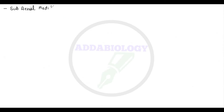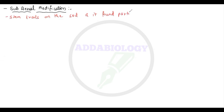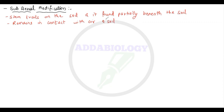Hello friends, I am Sunil sir and I'm back with a new video. In this video we are going to discuss about sub-aerial modification of the stem. The stem normally trails on the soil and is sometimes found partially beneath the soil — then it is sub-aerial modification. It remains in contact with air as well as soil.